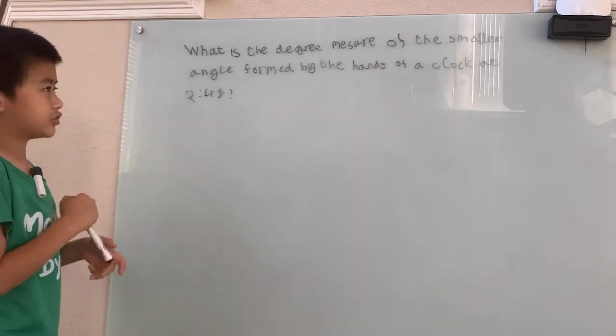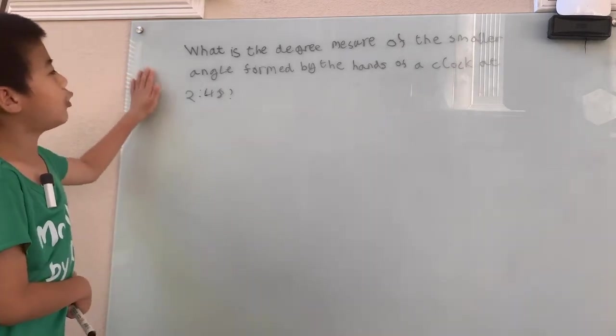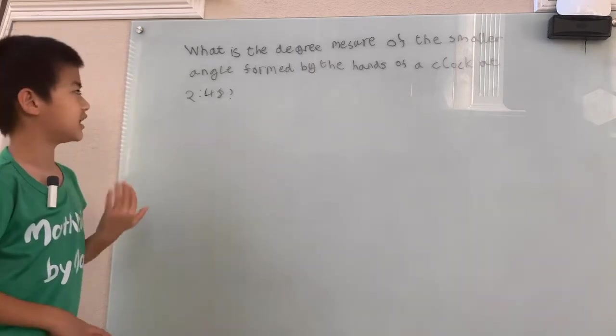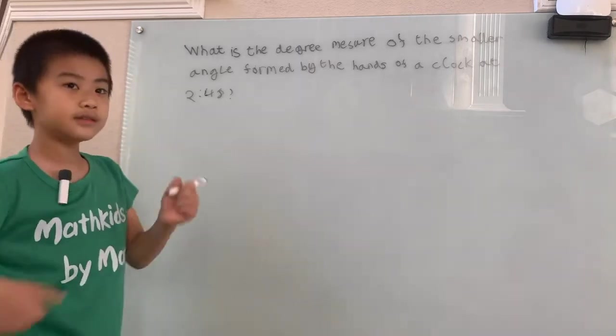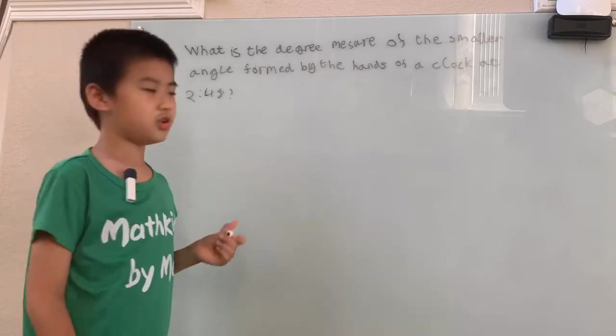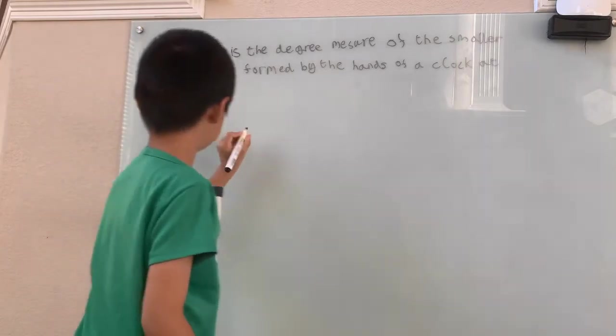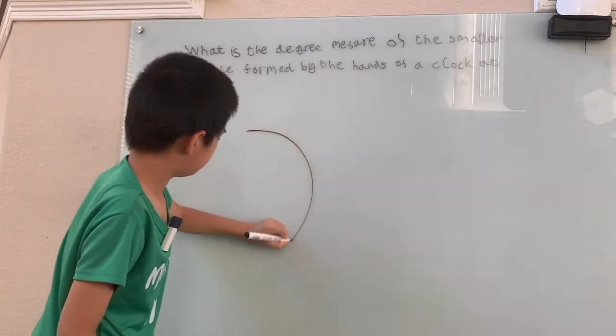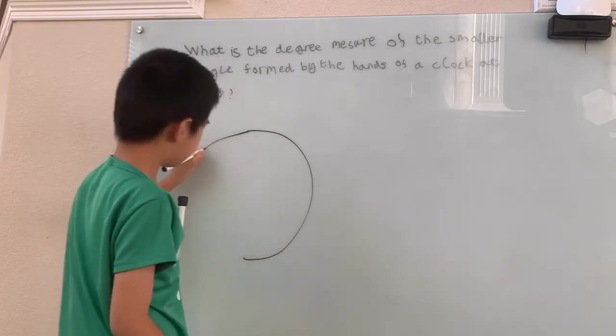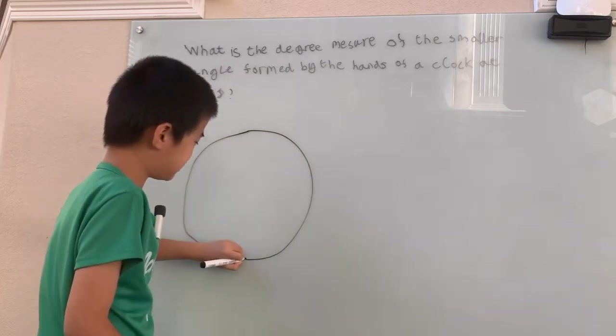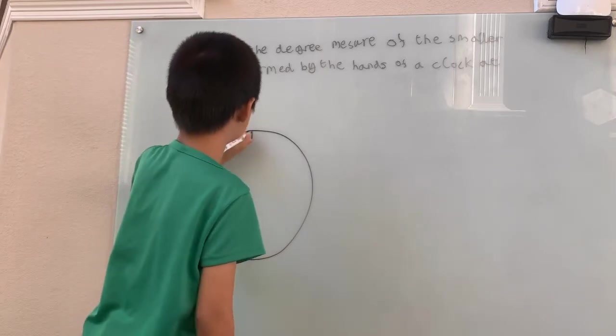What is the degree measure of the smaller angle formed by the hands of the clock at 2:48? Now, we're going to draw that clock, of course.